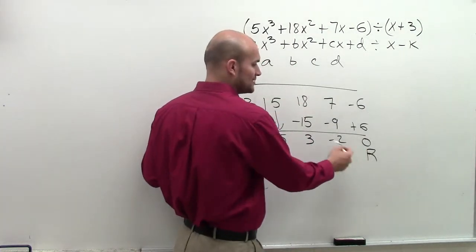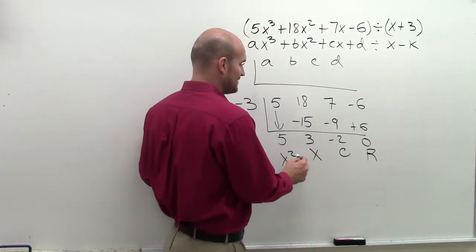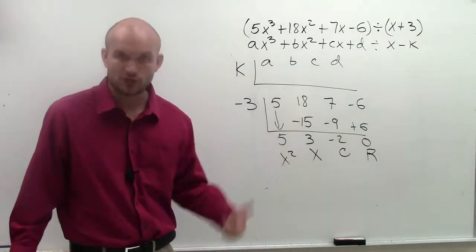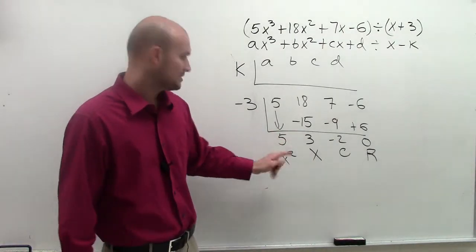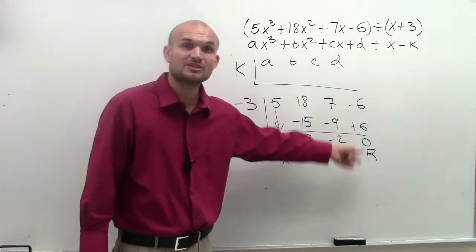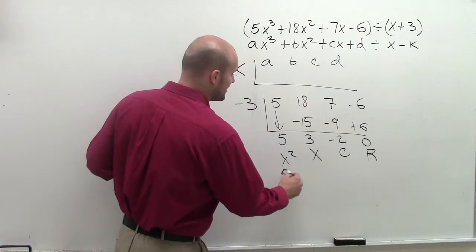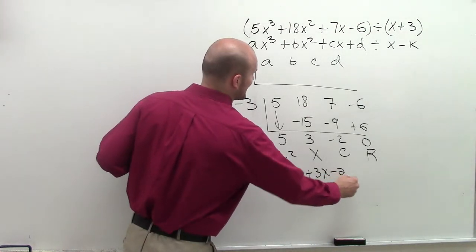So you have your remainder. The next term is your constant. Then you have your linear term, then your square term. If there were more place settings, we could go up to the cube, the fourth power, and so forth. These represent the coefficients of my quotient polynomial. So my final answer is going to be 5x² + 3x - 2.